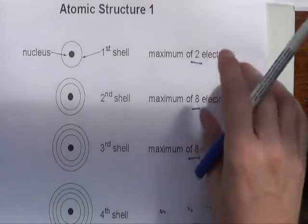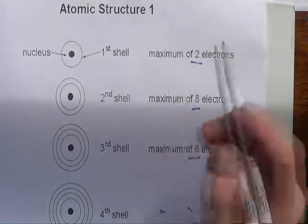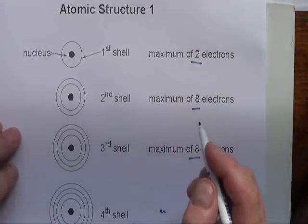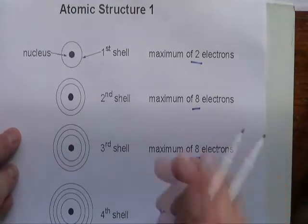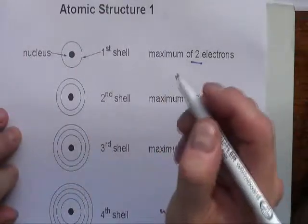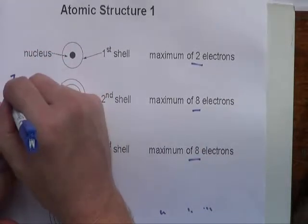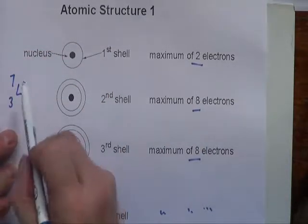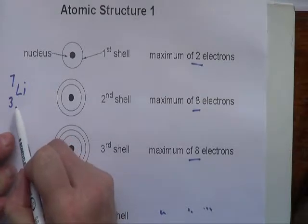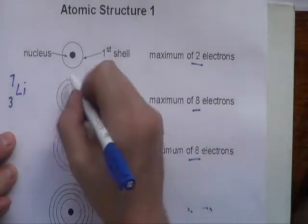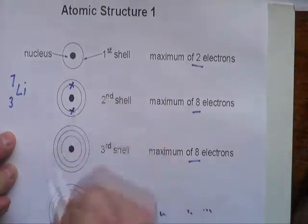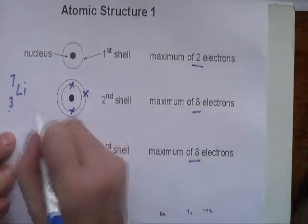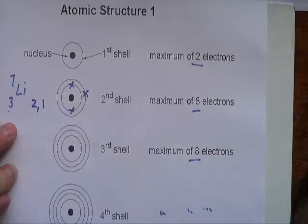We can write the electron arrangement — take lithium, which is seven and three. So we have three electrons to deal with. We put two in the first shell and one in the second shell. We can write it as 2,1.